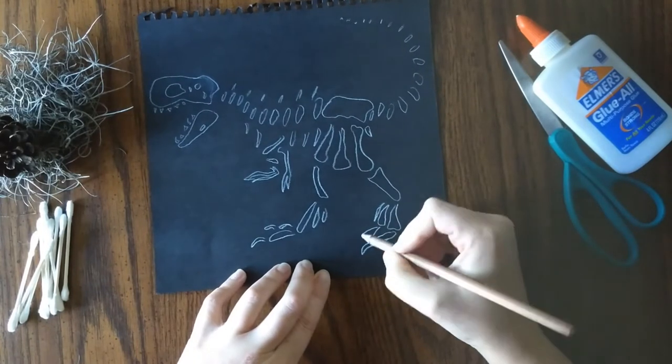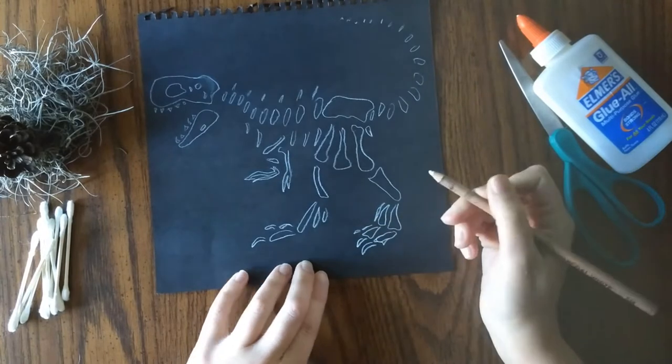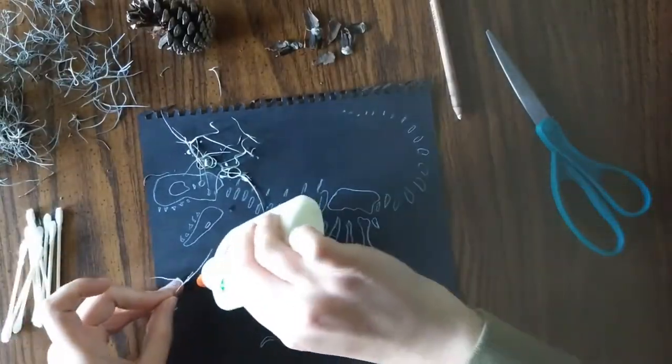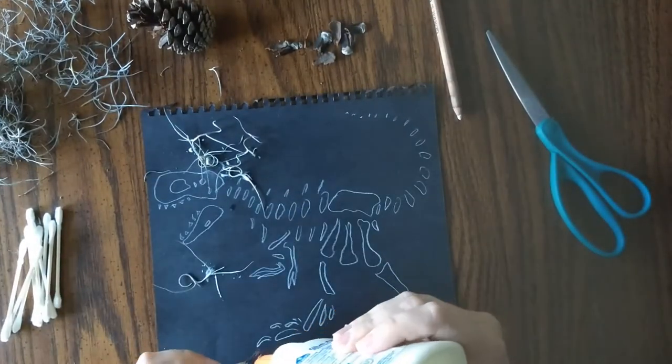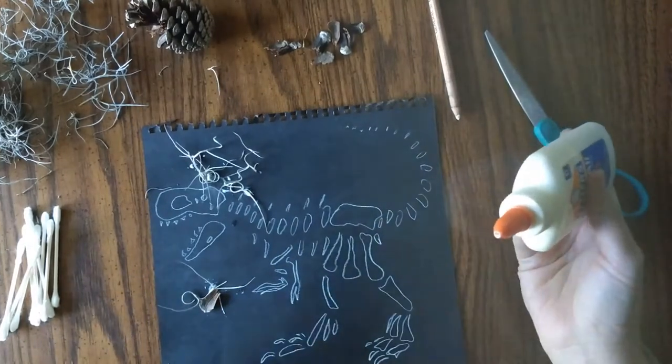I decided to draw a layout of the skeleton that I wanted. That's not a necessary step. If you need a layout you can just as easily print one or not use a layout at all. The kiddos didn't have a layout. I just let them put q-tips wherever they wanted.